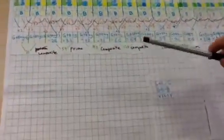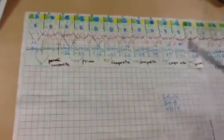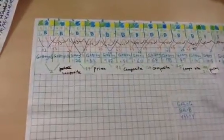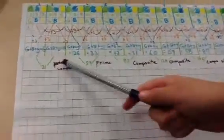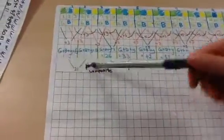I found that if we get G plus 3, it equals the next G, same with B and Y. If we add 3, we get the next B and the next Y.